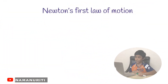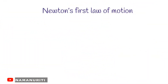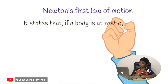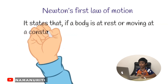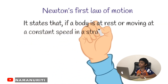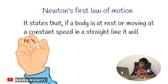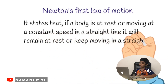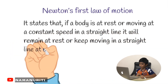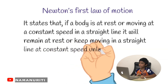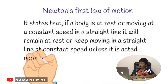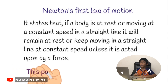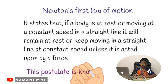Newton's first law of motion states that if a body is at rest or moving at a constant speed in a straight line, it will remain at rest or keep moving in a straight line at constant speed unless it is acted upon by a force. This postulate is known as the law of inertia.